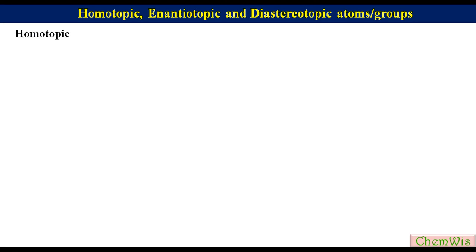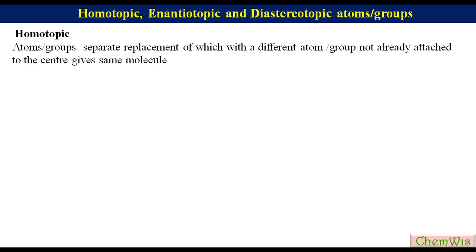Homotopic: Atoms or groups are said to be homotopic if their separate replacement with a different atom or group not already attached to the center gives the same molecule. Homotopic atoms or groups cannot be differentiated by NMR.